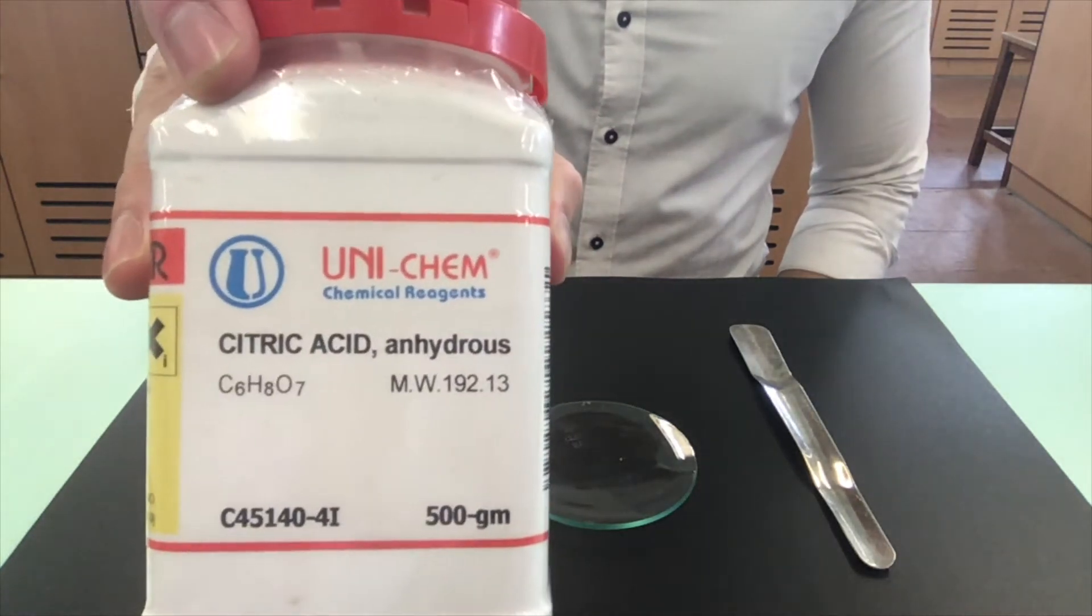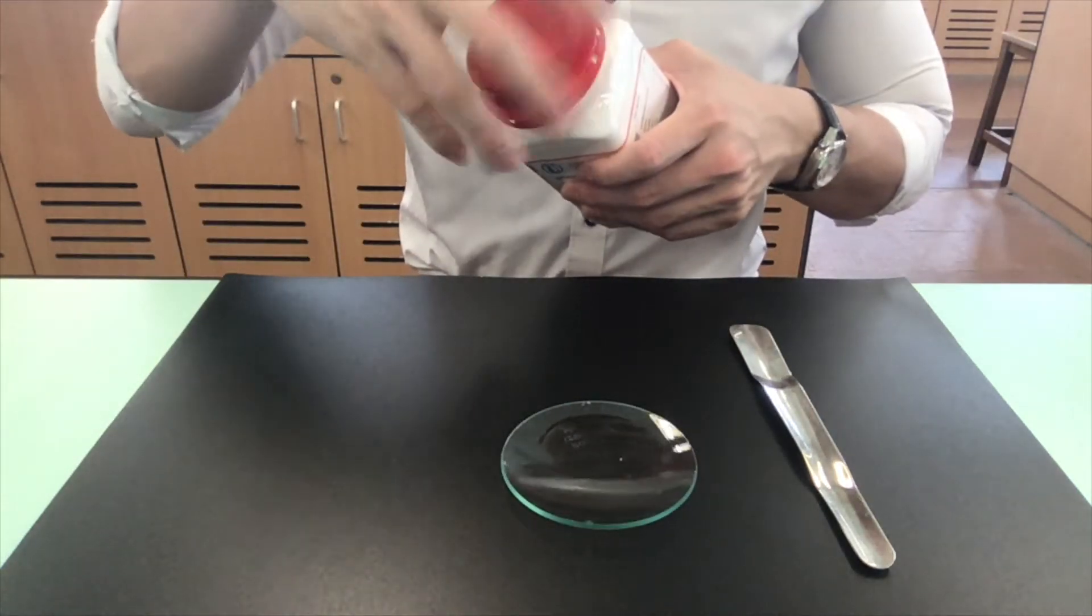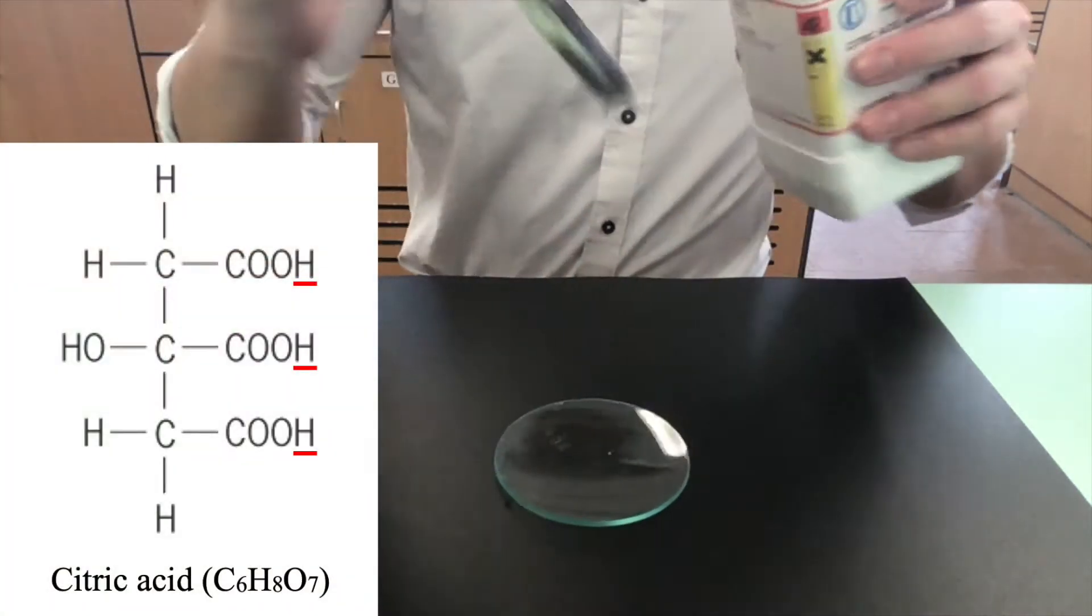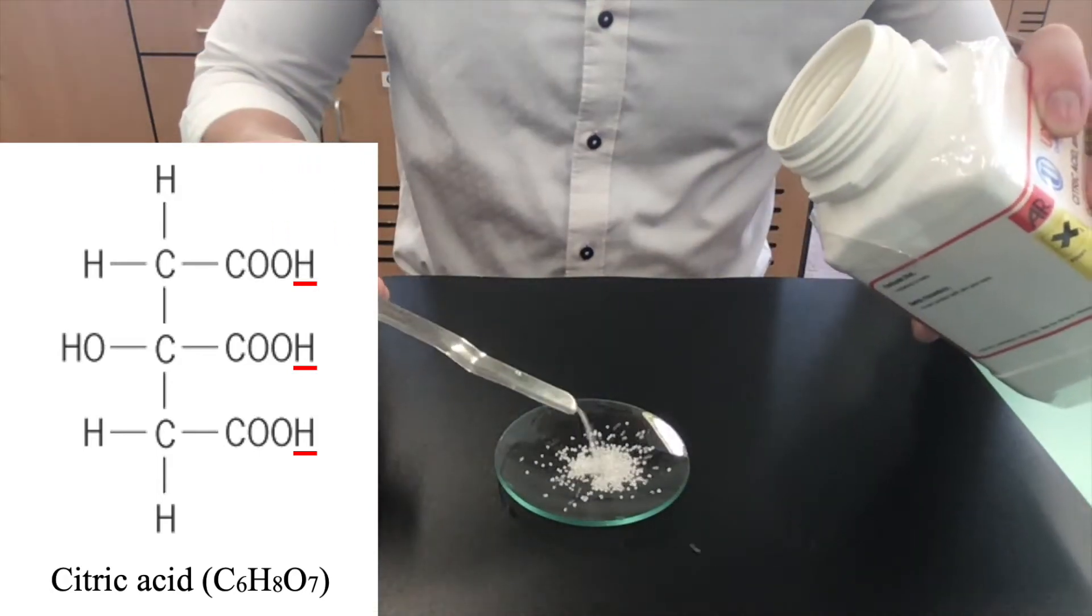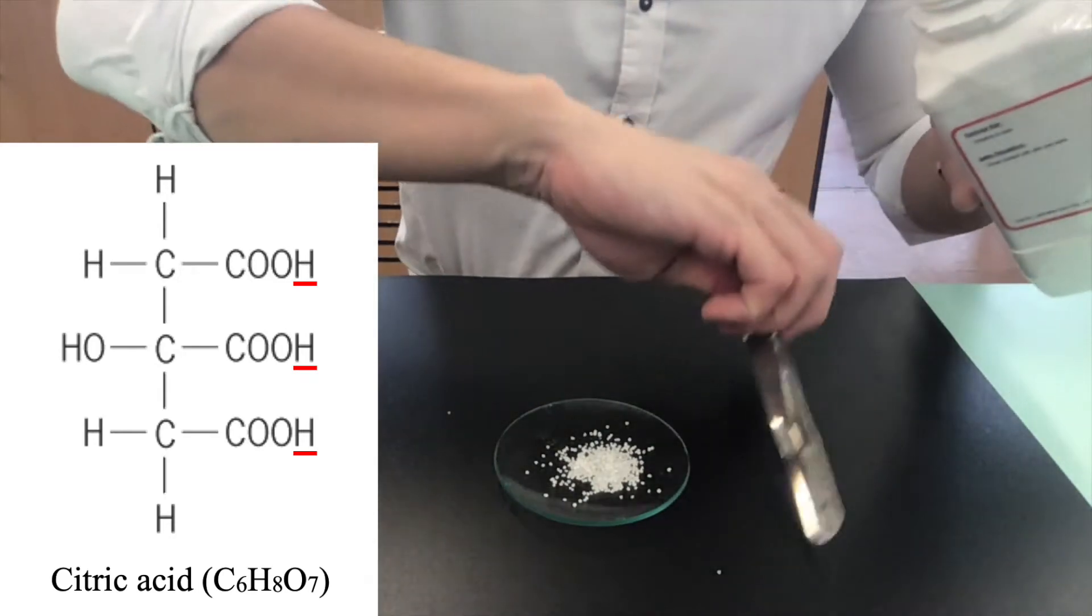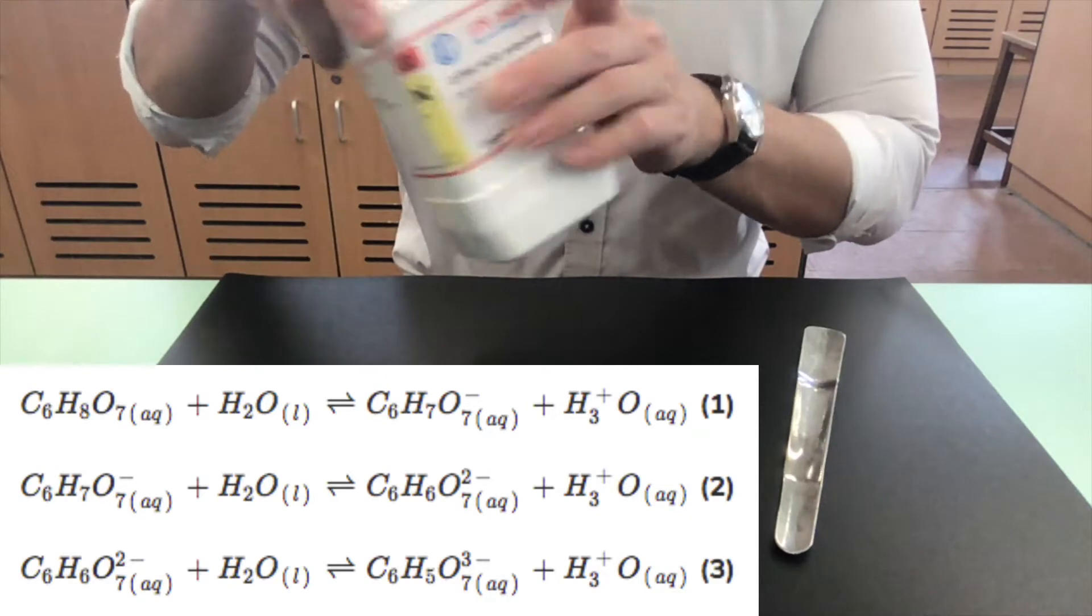This is a sample of solid anhydrous citric acid. The chemical formula of citric acid is shown here. Notice that there are three replaceable hydrogen atoms that can ionize in water to give H+ (aq). Notice that not all the hydrogen atoms are able to ionize to form H+ (aq).